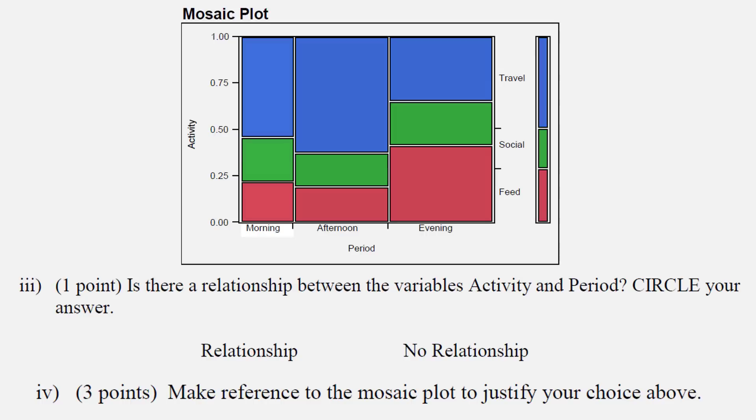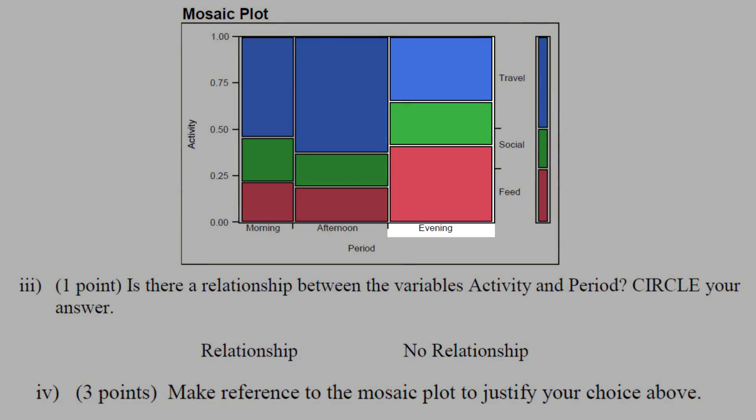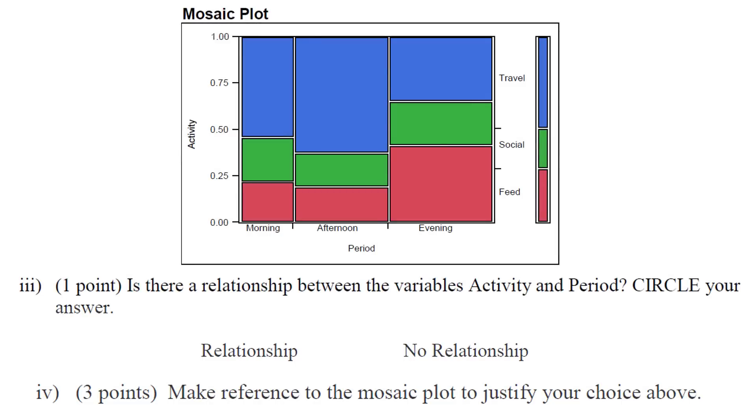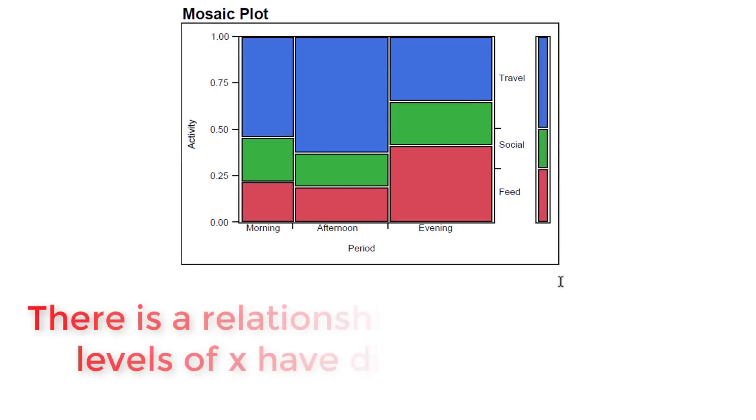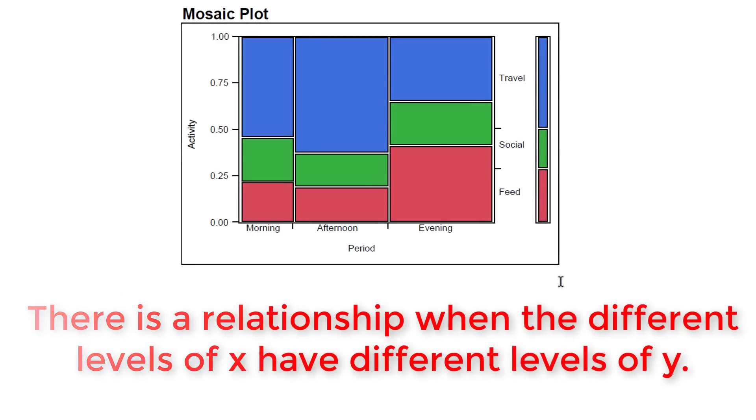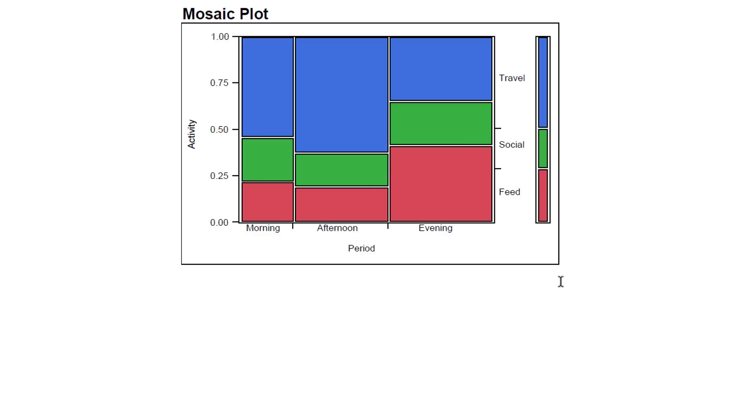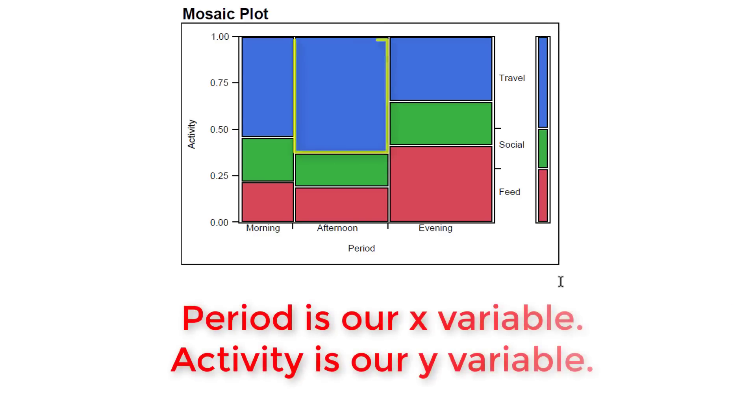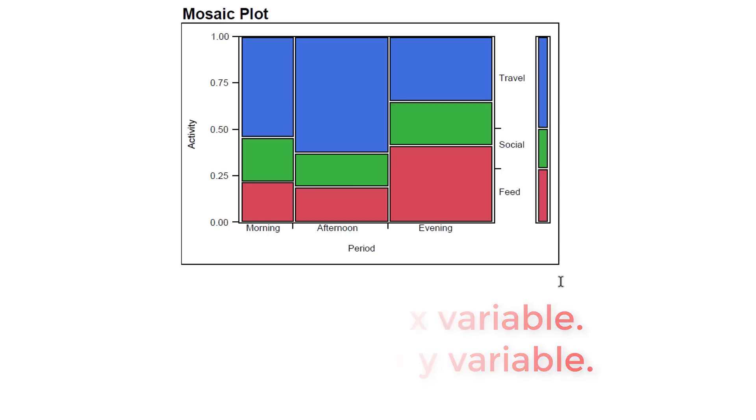If it is morning they'll be doing different activities than evening. If there is a relationship, we'll see a difference between the levels because a relationship means knowing X gives you some information about Y. If I told you it was afternoon, you might tell me that you think the dolphins are traveling. If I told you it's evening, you might tell me that you think they are either feeding or traveling. Looking at this right here, you can see that the activity changes given the period.